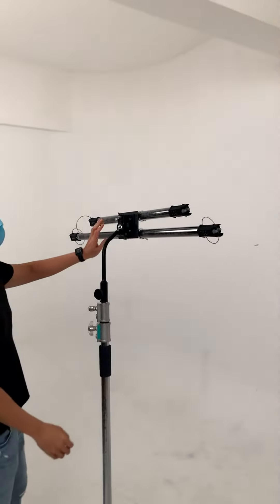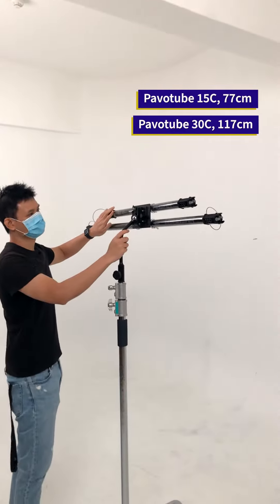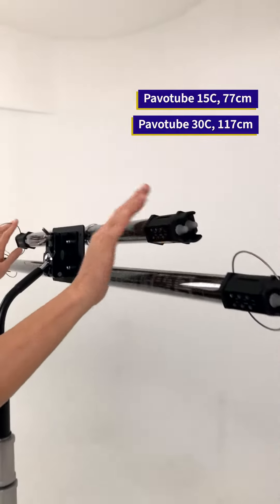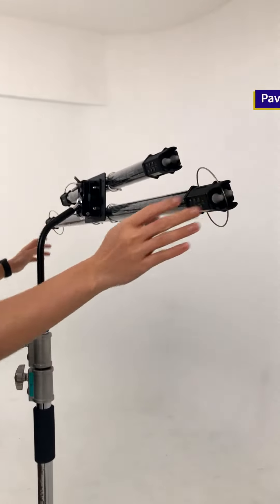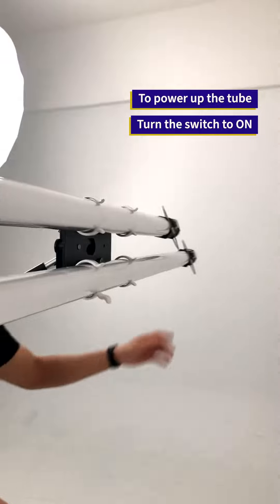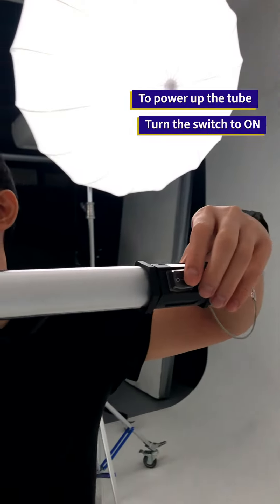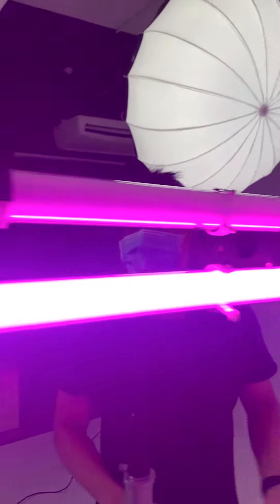This is a Pavotube RGB light. It comes in two sizes: first is a 15C, second one is the 30C. To turn this light on, you can use the power lever over here. Turn it on.